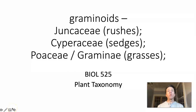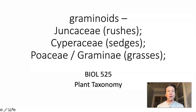In this lecture, we will go over the last three families that we are going to talk about, and these are all monocot families, and they are all graminoids. The families are Juncaceae, which are the rushes; Cyperaceae, which are the sedges; and Poaceae, also called Graminae, which are the grasses.